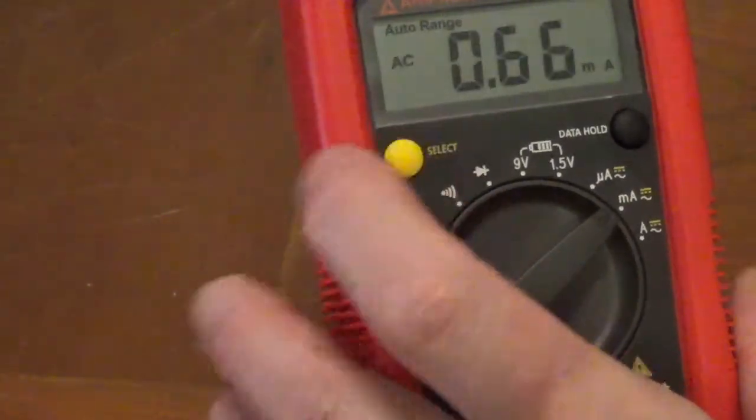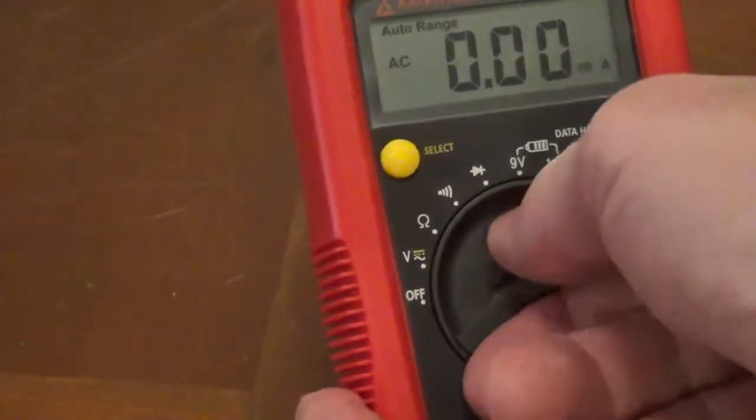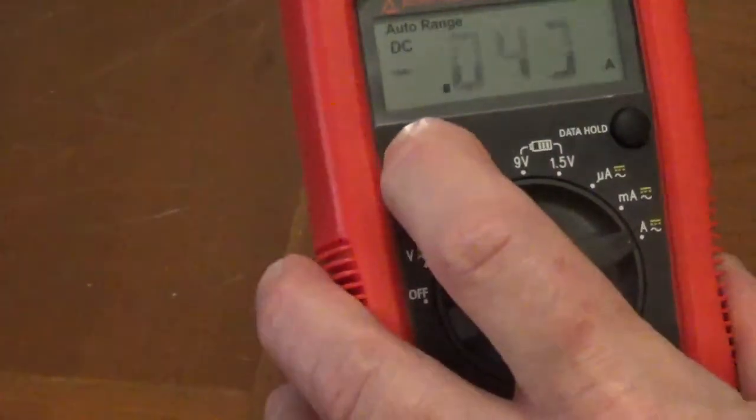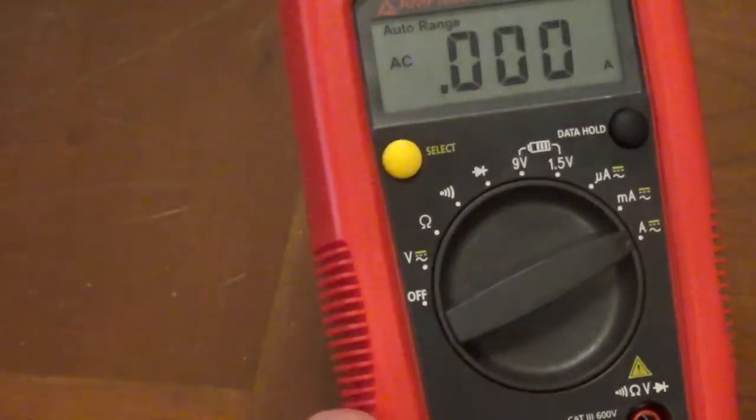The capital A is for amps up to 10 amps, and you can toggle between AC and DC.